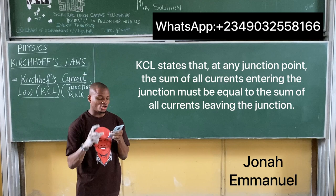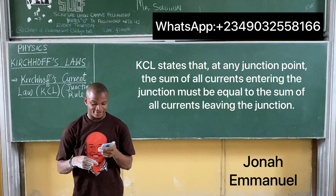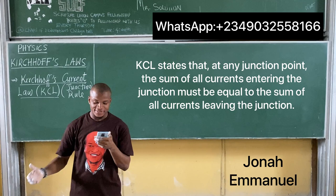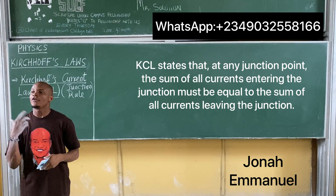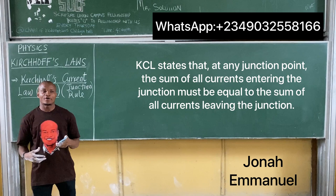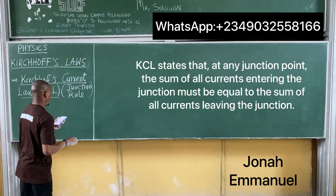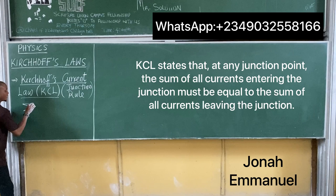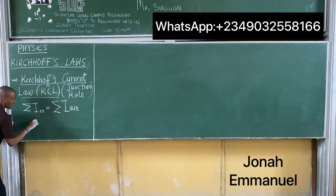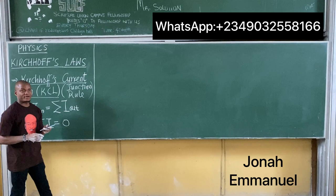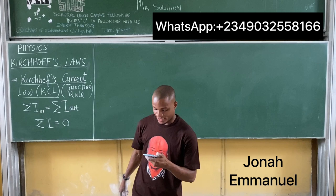KCL states that at any junction point, the sum of all currents entering the junction is equal to the sum of all currents leaving the junction. Mathematically, the sum of current I-in is equal to the sum of current I-out, or the sum of all currents at a junction equals zero.